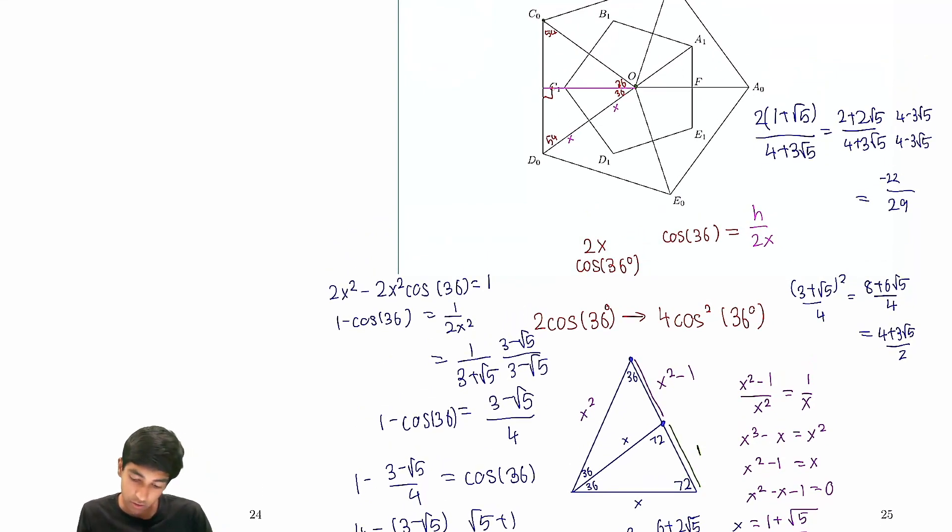So, cosine 36 squared, well, notice that we can rewrite this as 2 cosine squared 36. Or 2 cosine, sorry, 2 cosine 36 squared. But then take a look. 2 cosine 36 is just x. And we already know x squared is 3 plus √5 by 2.